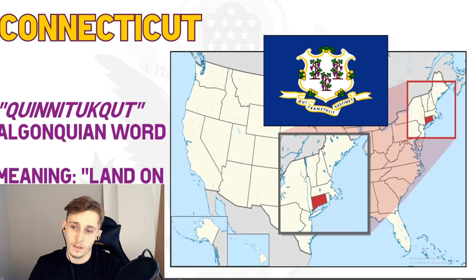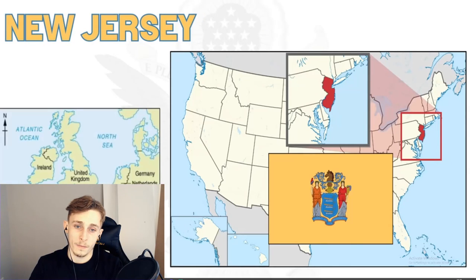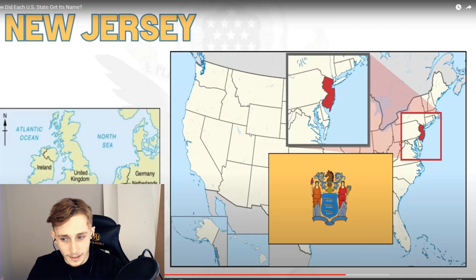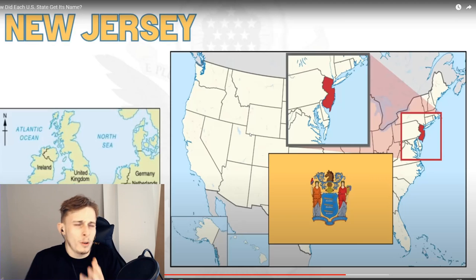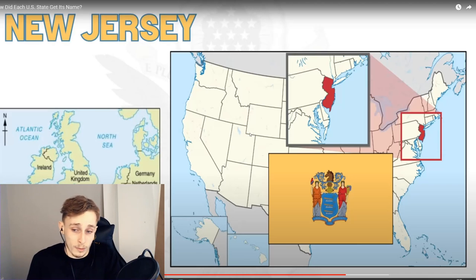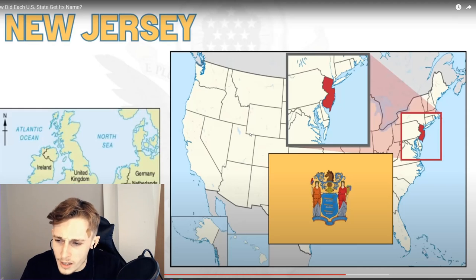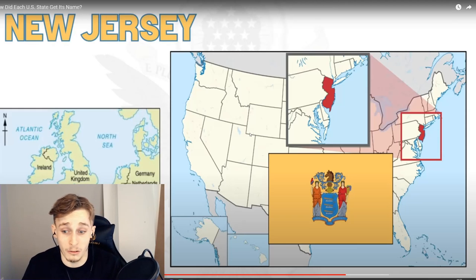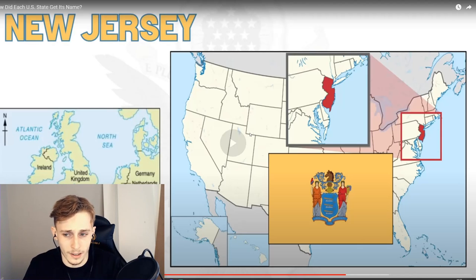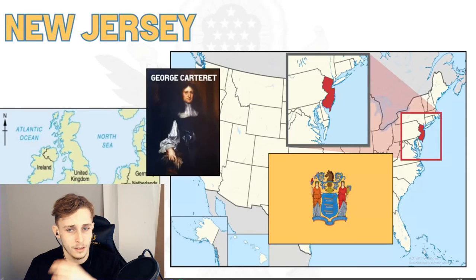Connecticut is of native origin — 'Quinatucquet' was an Eastern Algonquin word meaning 'land on the long tidal river.' New Jersey is named after Jersey, the largest of the British Channel Islands. That's wild — Jersey is just this tiny island and New Jersey is a big state in comparison, probably a thousand times bigger. The state was initially created under the name 'New Caesarea' because the Roman name of the original Jersey was thought to have been that during the Roman Empire.